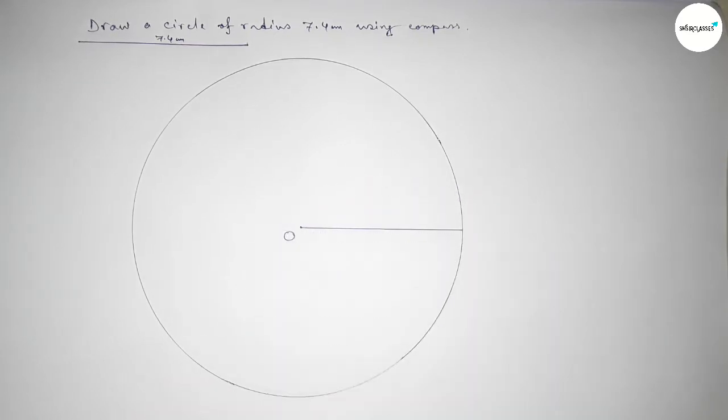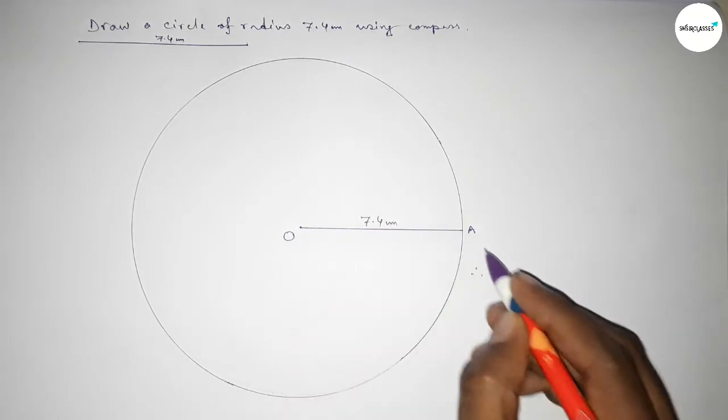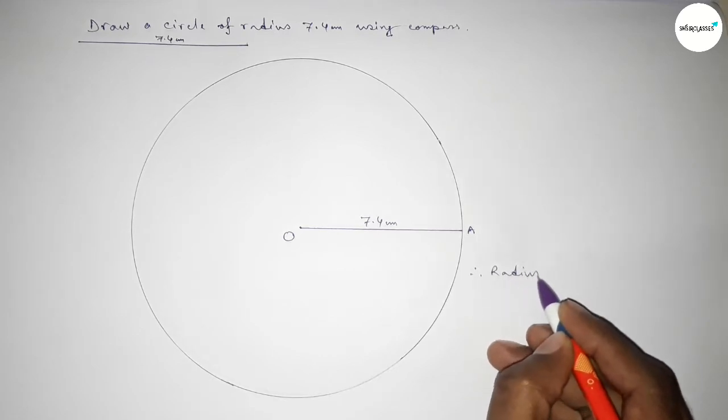Joining this and taking here point O. So radius OA is 7.4 centimeters. Therefore radius OA equals 7.4 centimeters.